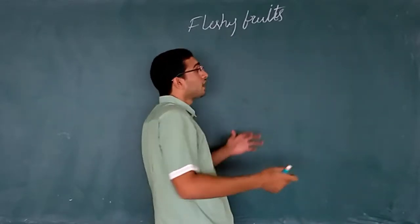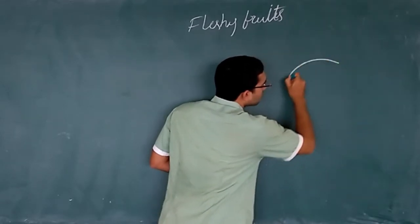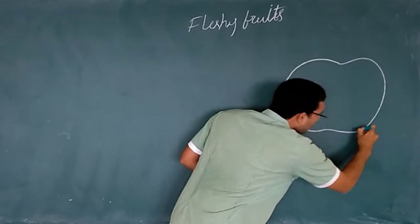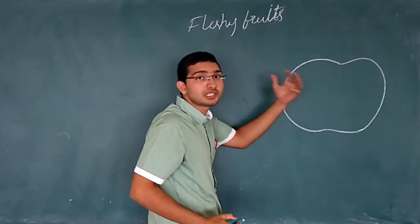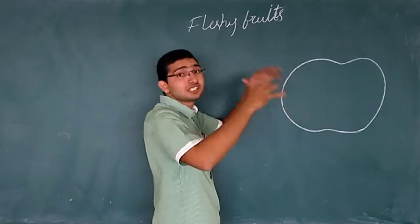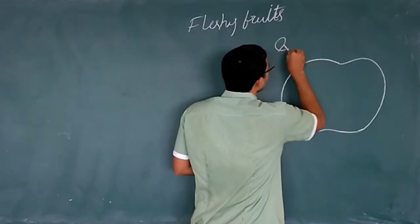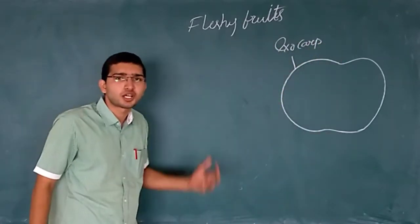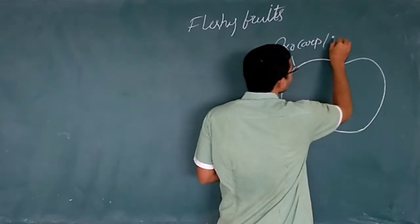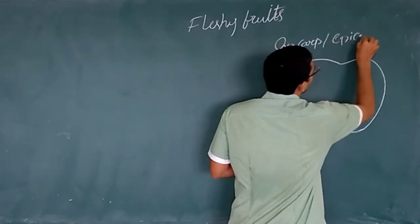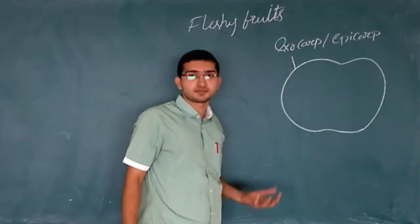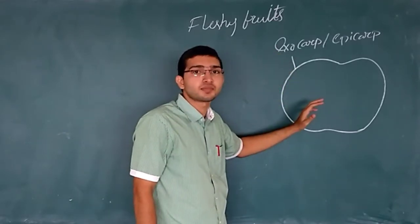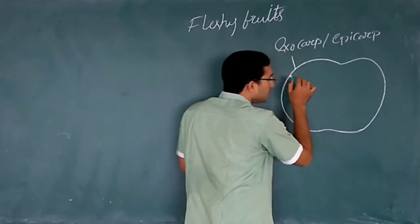Here you can observe the outermost layer of the fruit, which is the exocarp. The outermost layer of the fruit is termed the exocarp because it is on the outside. It is also termed the epicarp, as it is the outermost layer. Below the exocarp, the mesocarp is present.